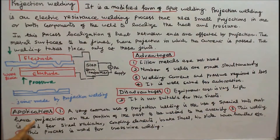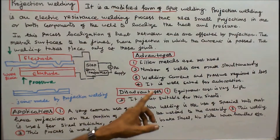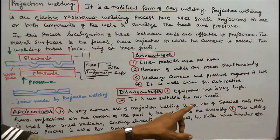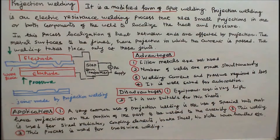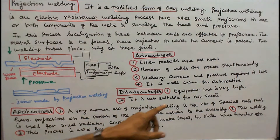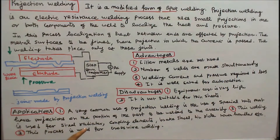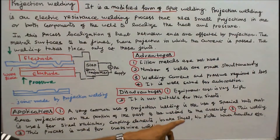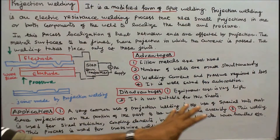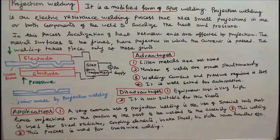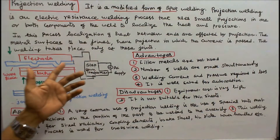Applications: Number 1 — a very common use of projection welding is the use of special nuts that have projections on the portion of the part to be welded to the assembly. Number 2 — this welding is used for steel radiators, coupling elements, brake shoes, tin plate tacks, candles, etc. Number 3 — this process is used for cross wire welding.